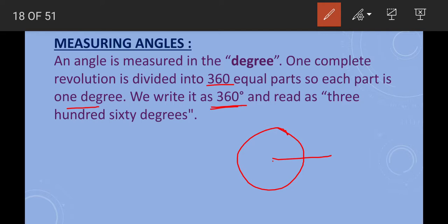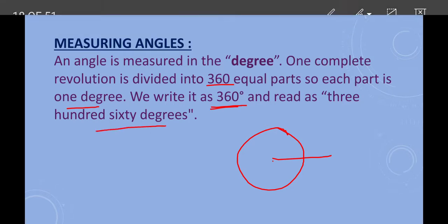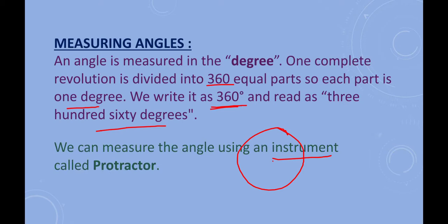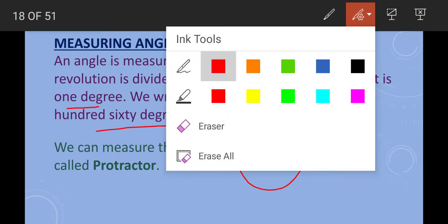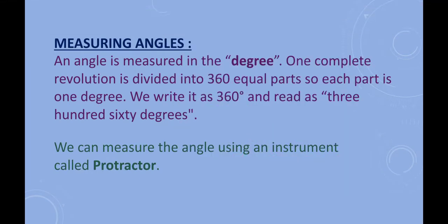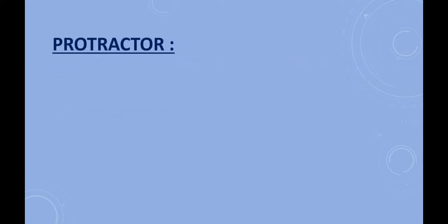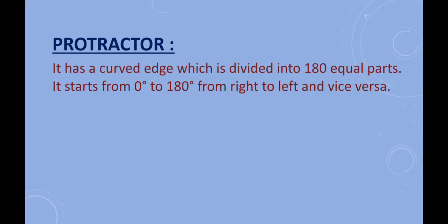We can measure an angle using an instrument known as a protractor. A protractor is a curved face divided into 180 equal parts. It starts from 0 degrees to 180 degrees.